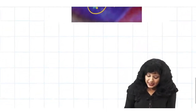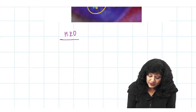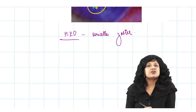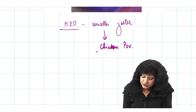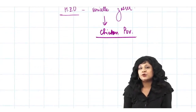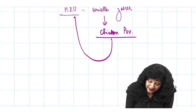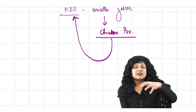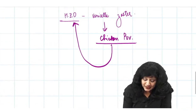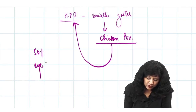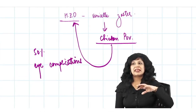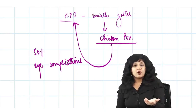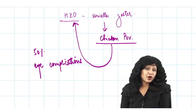Herpes zoster ophthalmicus is caused by the varicella zoster virus — the same virus responsible for chickenpox. People who have previously suffered from chickenpox have lifelong immunity to chickenpox but are not immune to herpes zoster ophthalmicus. Approximately 50% of patients with herpes zoster ophthalmicus show eye involvement and ocular complications.